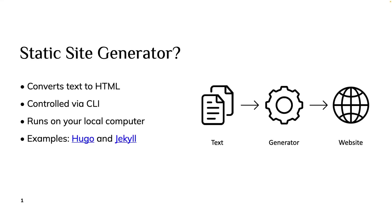Static site generators are usually controlled via a command line interface, or CLI for short. They don't ship with a visual interface that you can use to manage your website — everything happens inside of a code editor and is pushed via CLI to a static site hoster. Static site generators usually run on your local computer, so you make all your changes locally and push the results online.